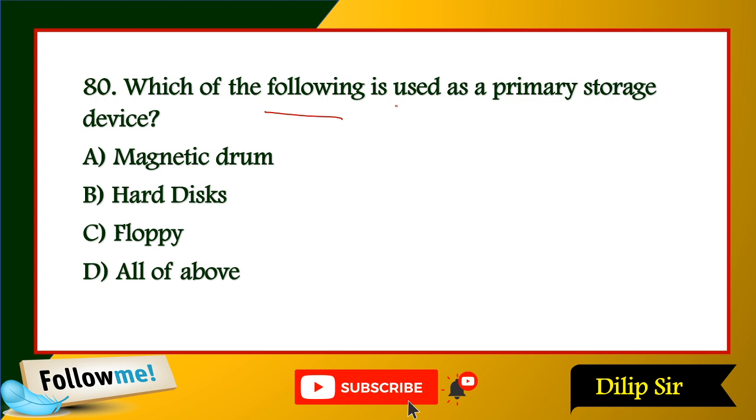Which of the following are used as primary storage devices? Magnetic drum, hard disk, floppy disks — all of the above.